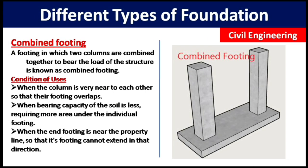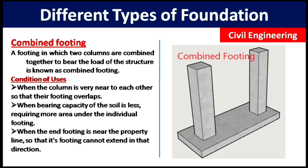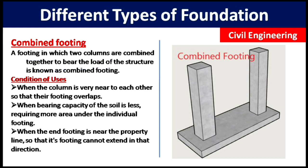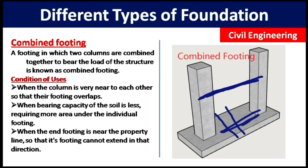The next type is combined footing. According to its name, combined footing is the combination of two footings. As you can see in the picture, the footing of one column and the footing of another column are combined with each other. A footing in which two columns are combined together to bear the load of a structure is known as combined footing.